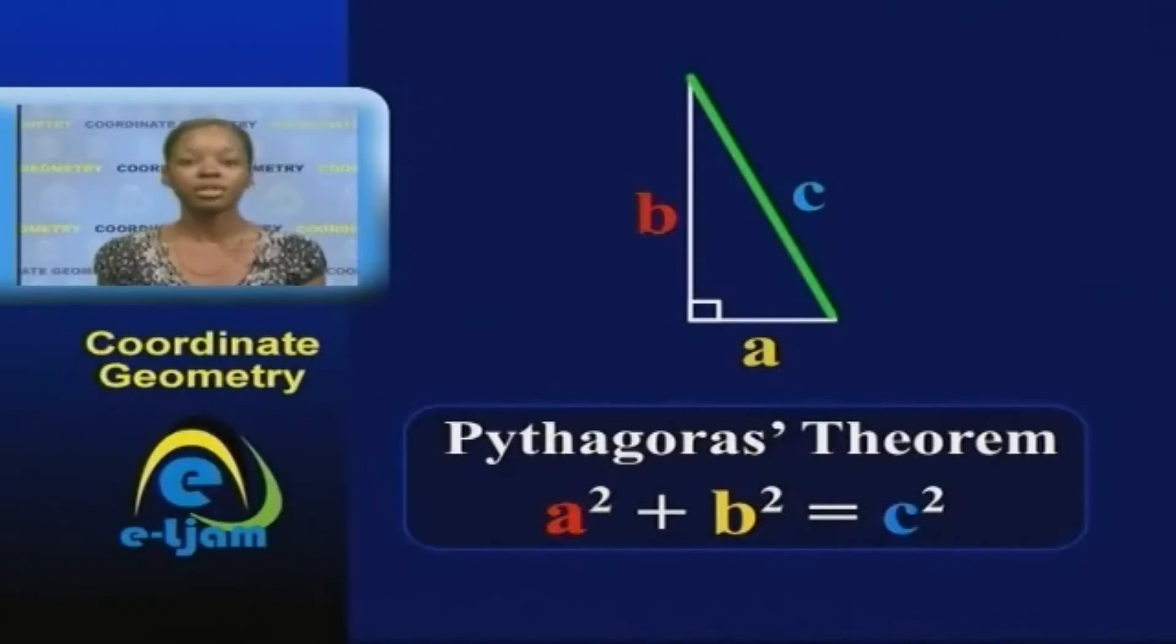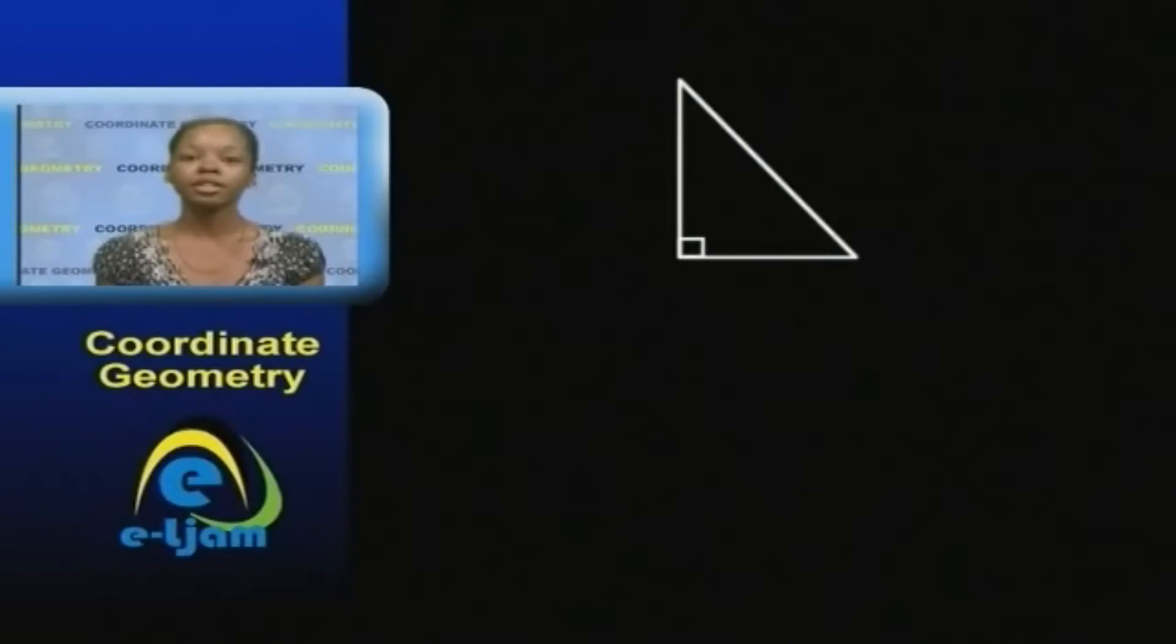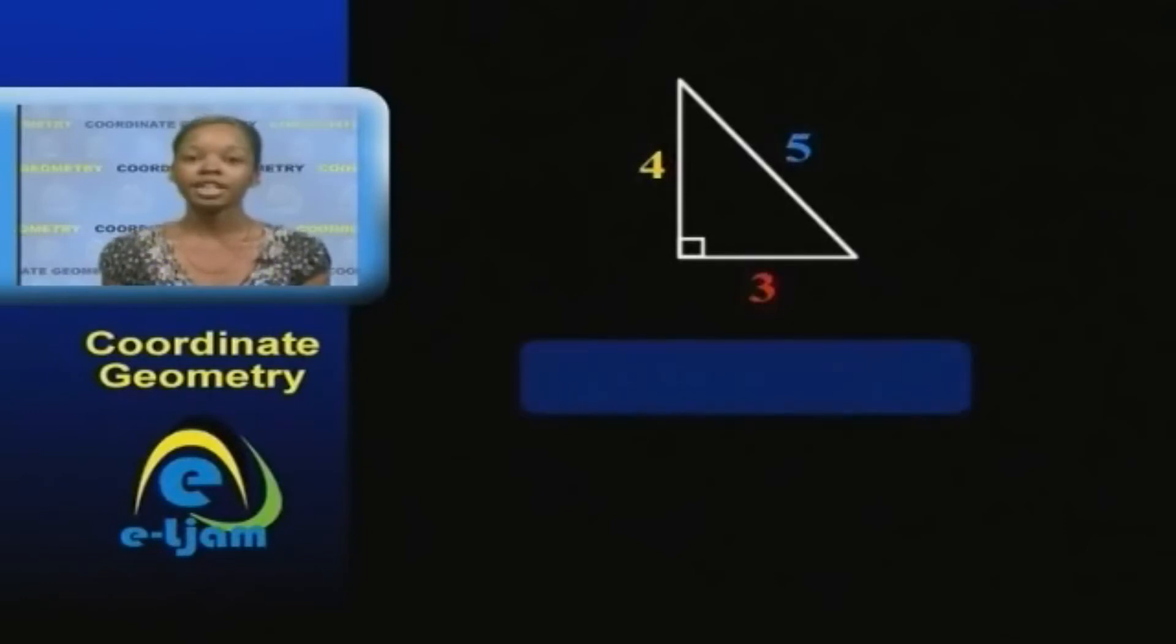Let us see if this really works, using an example. A right-angled triangle has sides 3 cm, 4 cm, and 5 cm. Let's check if the areas bear out the truth of the theorem.